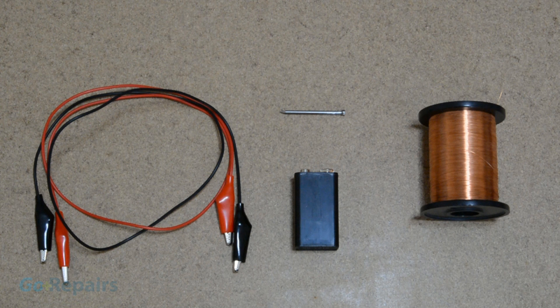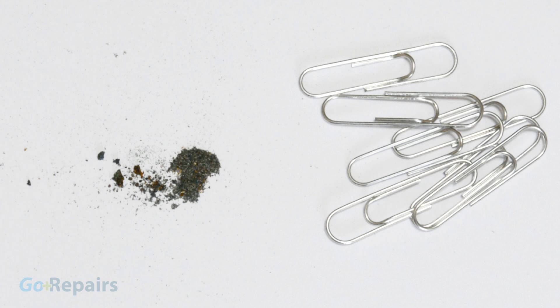The materials you will need are some insulated copper wire, a form of iron like a nail, and a battery. Optional materials are some paper clips and iron filings to help you see it working.